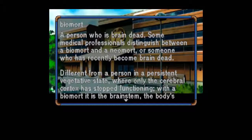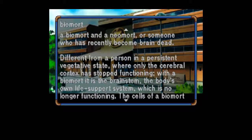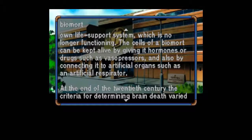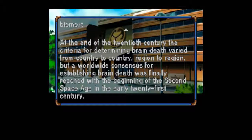Biomort: A person who is brain dead. Some medical professionals distinguish between a biomort and a neomort, or someone who has recently become brain dead. Different from a person in a persistent vegetative state, where only the cerebral cortex has stopped functioning — with a biomort, it is the brain stem, the body's own life support system, which is no longer functioning. The cells of a biomort can be kept alive by giving it hormones or drugs such as vasopressors, and also by connecting it to artificial organs such as an artificial respirator. A worldwide consensus for establishing brain death was finally reached with the beginning of the second space age in the early 21st century.